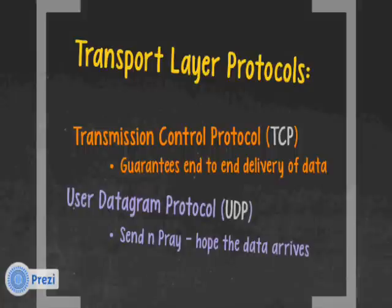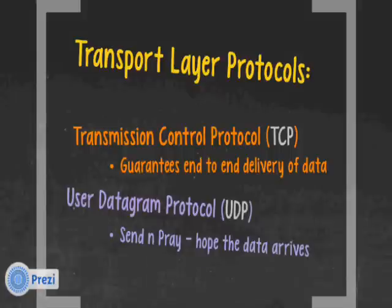All of this was designed back in the 70s. The Department of Defense built a network called ARPANET — the internet actually came through the ARPANET — and it was supposed to survive a nuclear holocaust. What really required all this guaranteed end-to-end delivery is that most wide area networks were analog, using modems, and they weren't reliable. So we needed a lot of error checking — overhead — to make sure data actually got to the destination.